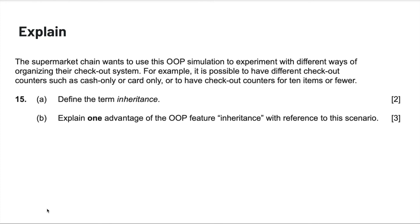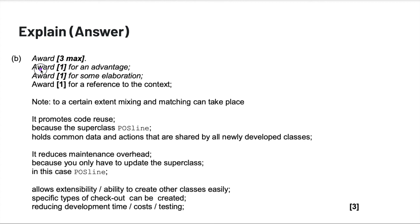Next, explain — generally more substantial. For example: explain one advantage of the OOP feature inheritance with reference to the scenario. The mark scheme awards one mark for the advantage itself, one for elaboration, and one for reference to the context. One problem many students have is forgetting the context in which the exam is taking place — anytime you're answering these questions, it's really important to reference the context of the question.